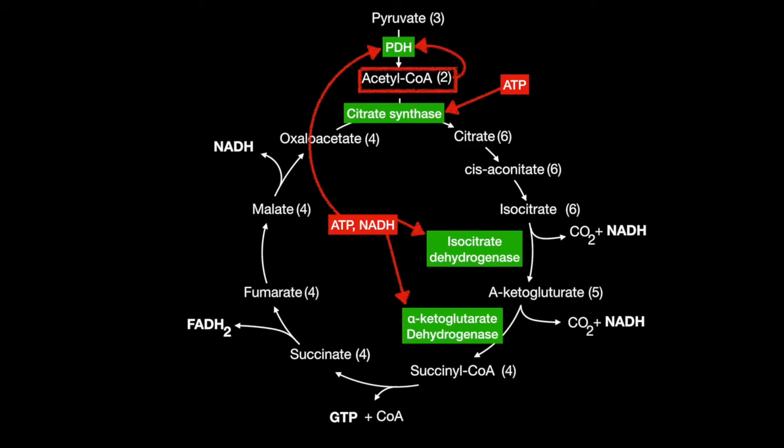Acetyl-CoA is the product of pyruvate dehydrogenase, and it too is an inhibitor. Succinyl-CoA is the product of alpha-ketoglutarate dehydrogenase, and it too inhibits it. And finally, one last thing to remember is that ADP activates isocitrate dehydrogenase.